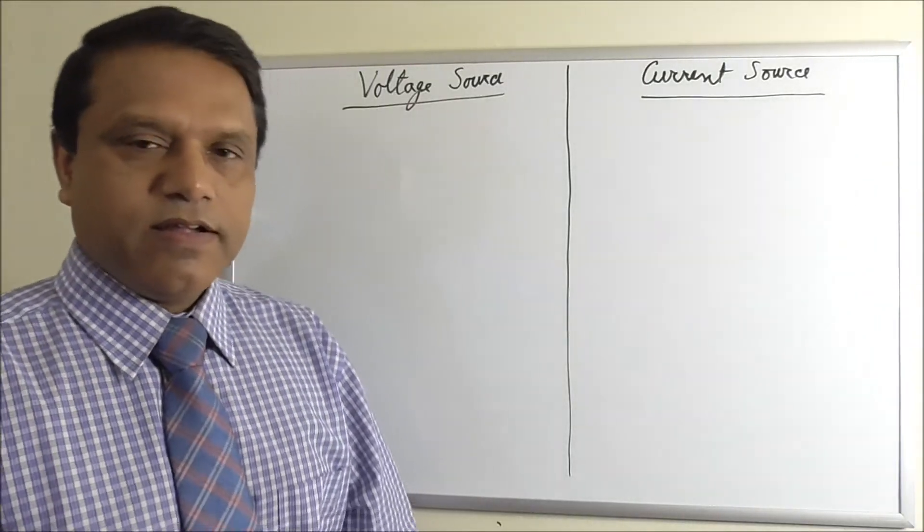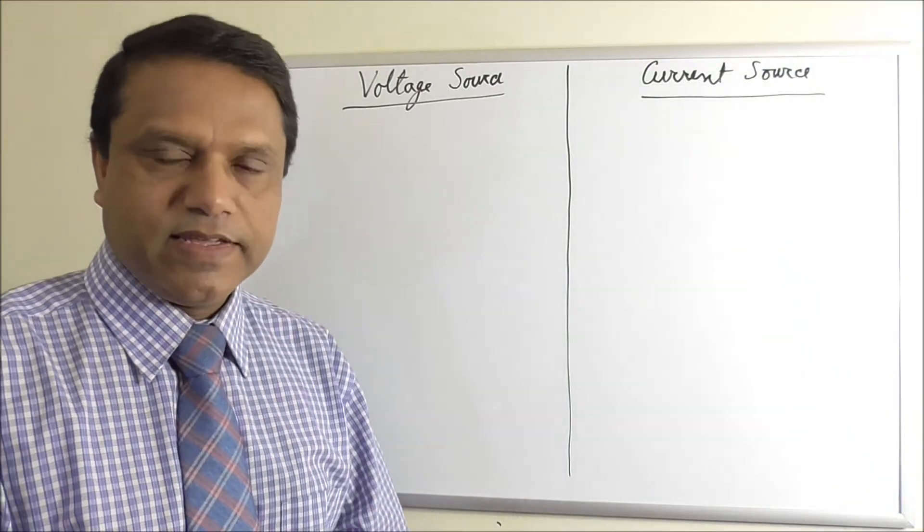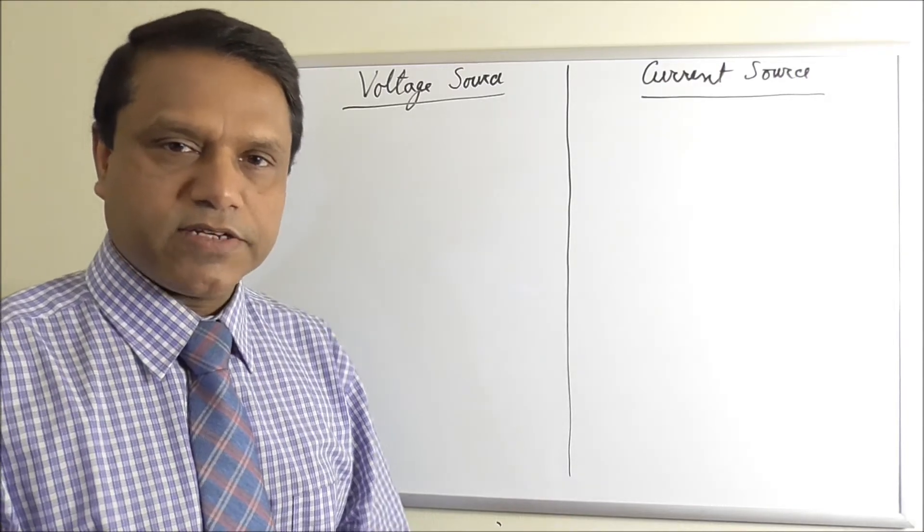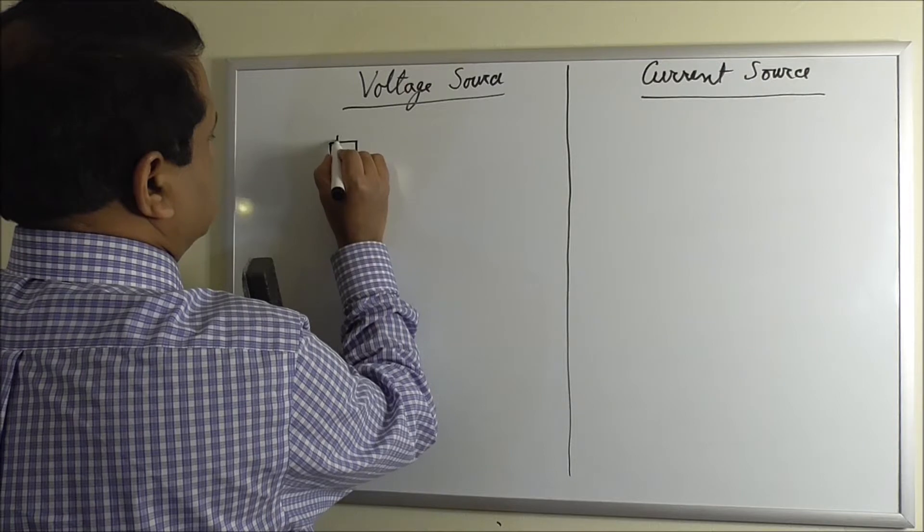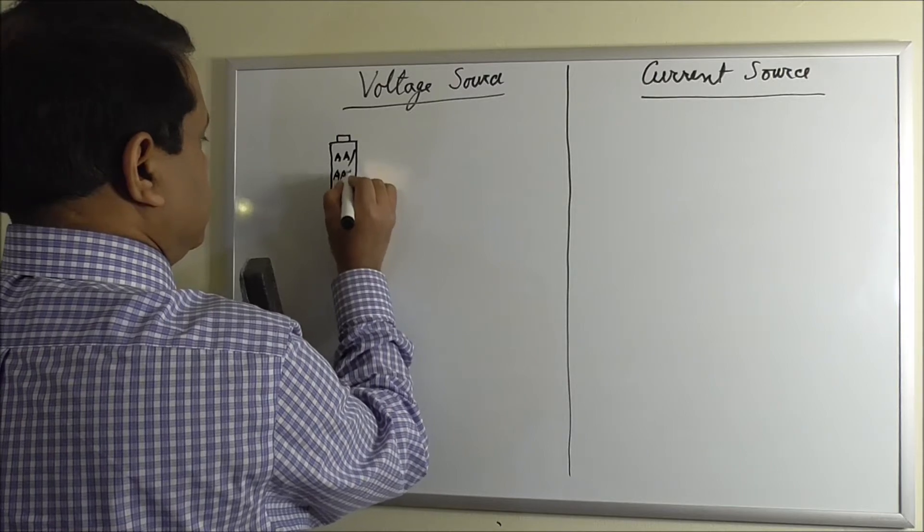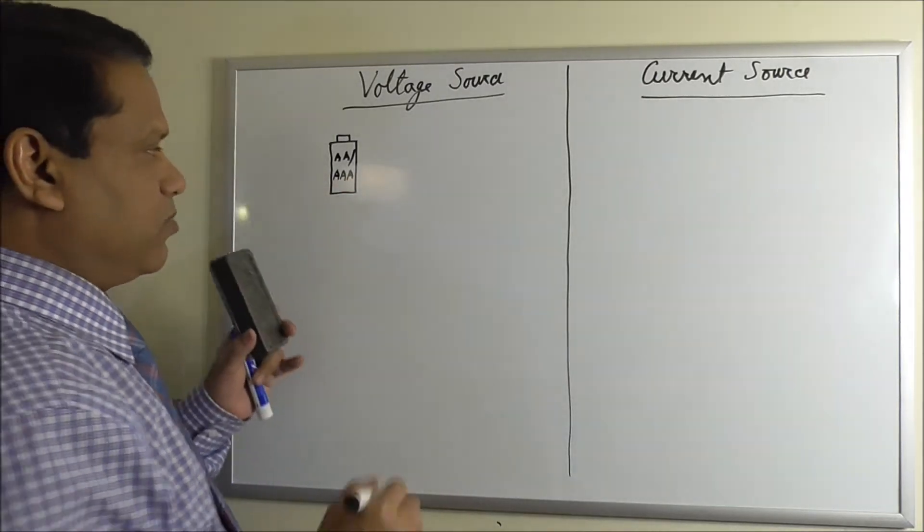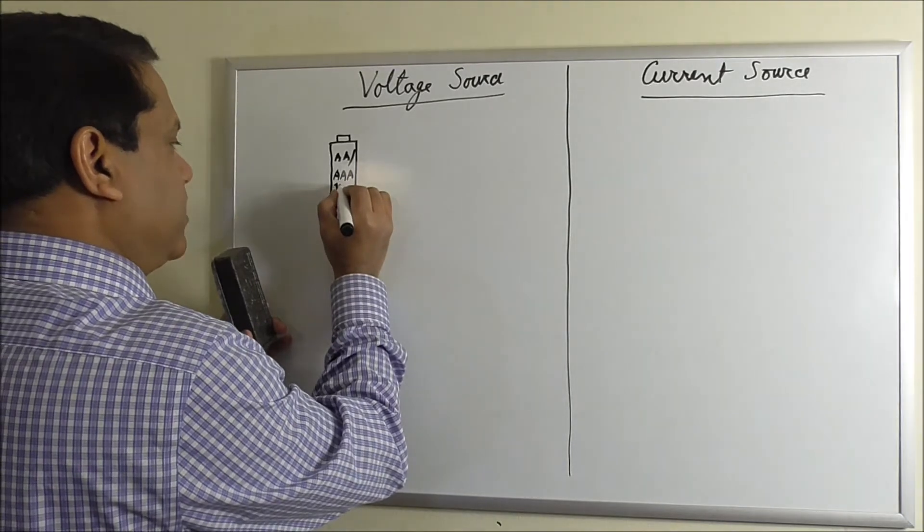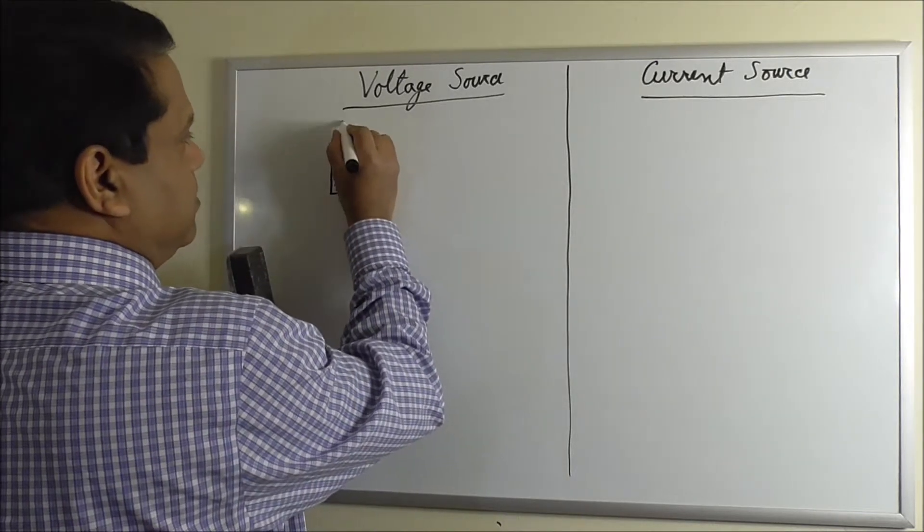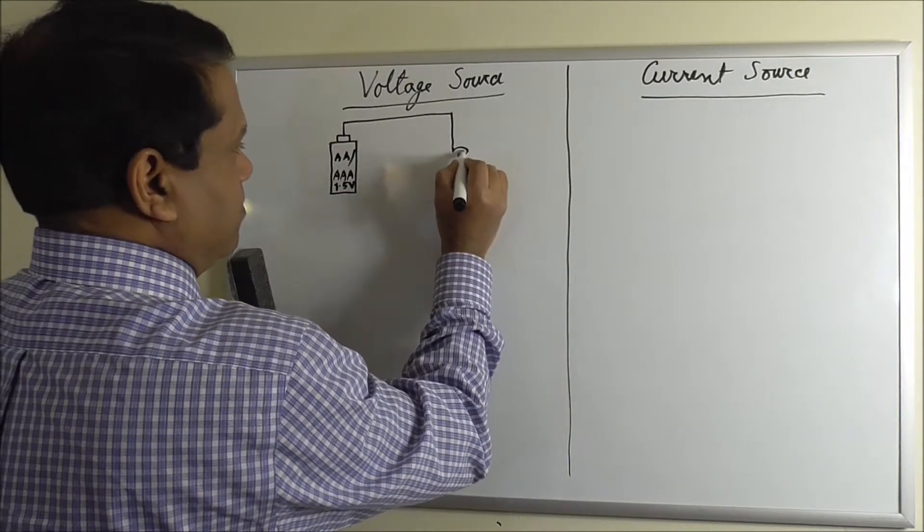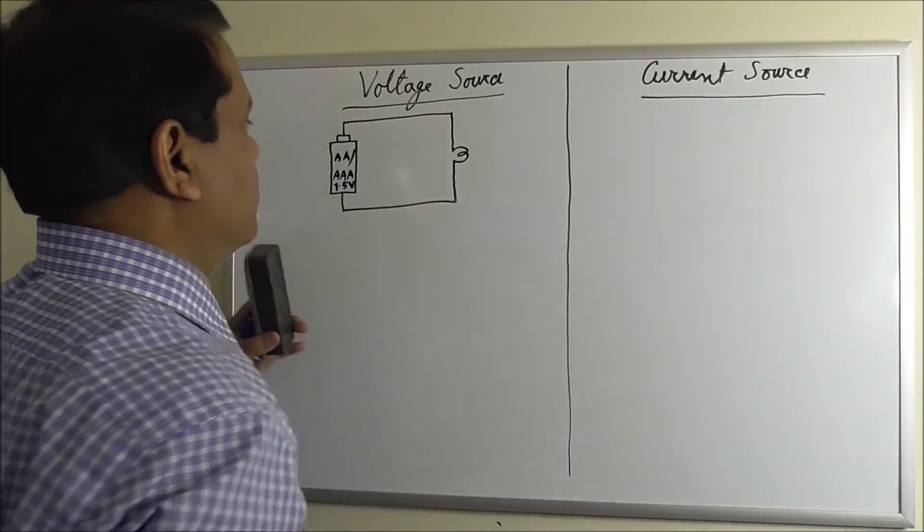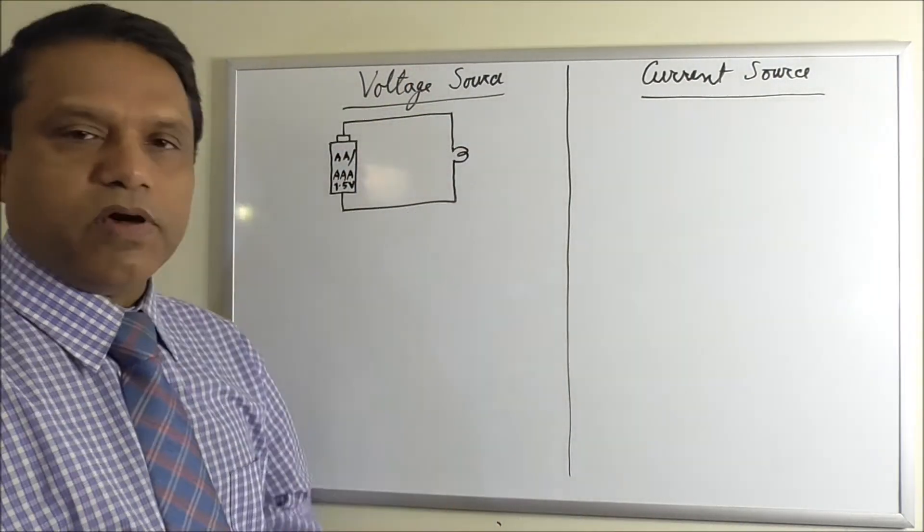We all know what voltage sources are. A very common example is a battery. Let's take a double A or triple A battery that are available in the market. So this is a 1.5 volt battery. If you connect this battery with a low voltage bulb, current will start flowing and this bulb will light up.